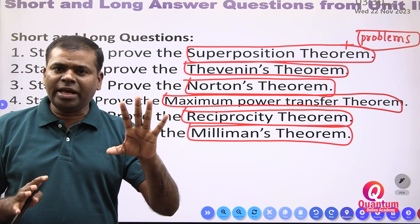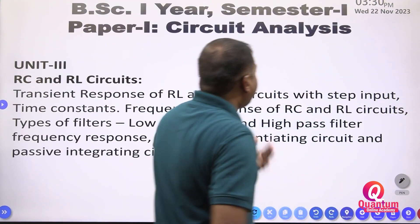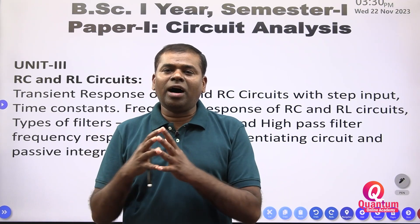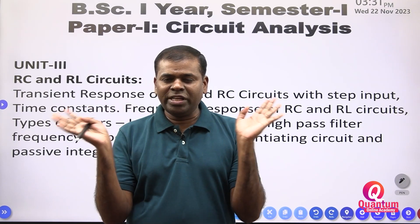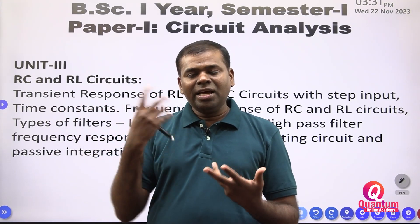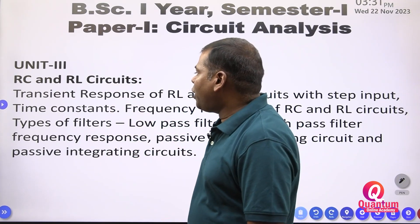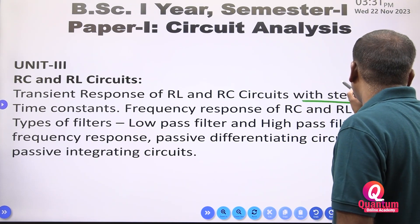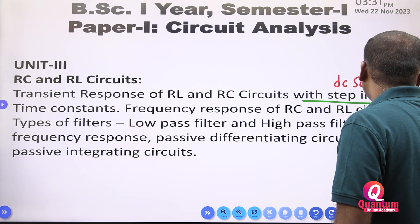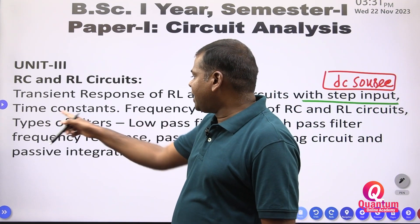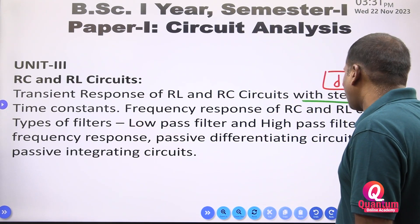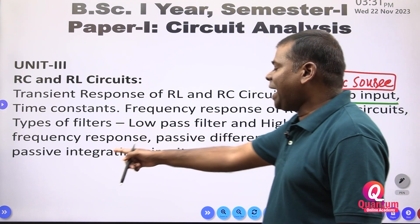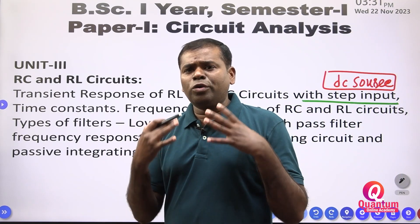For Unit 2 there are six theorems and six corresponding questions to study. For Unit 3, there are two types of circuits: RL circuit and RC circuit. These are passive components only. The syllabus covers transient response of RL and RC circuits with the step input function — which is a DC source — time constants, frequency response of RC and RL circuits, types of filters: low pass filter and high pass filter, and passive differentiating and passive integrating circuits.